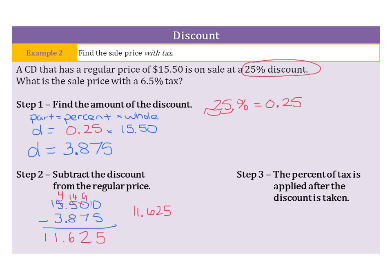Now, we need to apply the percent of tax in step 3. So, our tax is 6.5%, which, as a decimal, move the decimal place over twice, is going to be 0.065. Now, we are looking for 6.5% of the 11.625. So, all we need to do now is take our 0.065 and multiply it by that 11.625 to get an answer of 0.755.